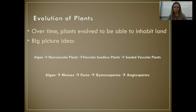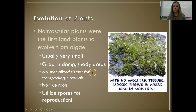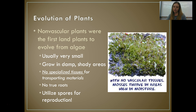We're going to talk about each of these, so don't stress if you don't know what these words mean yet. Our first true plants to evolve were our non-vascular plants, which evolved from algae. Typically they are very small and they still require a great deal of moisture, so they grow in damp, shady areas because they don't have vascular tissue — the specialized tissues for transporting materials.